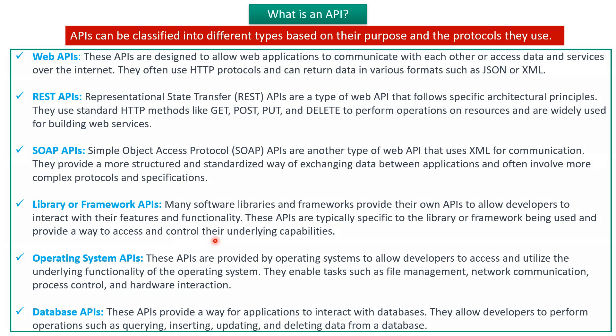The fourth one is Library or Framework APIs. Many software libraries and frameworks provide their own APIs to allow developers to interact with their features and functionality. These APIs are typically specific to the library or framework being used and provide a way to access and control their underlying capabilities.